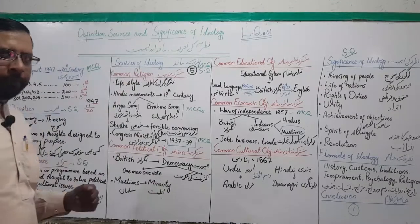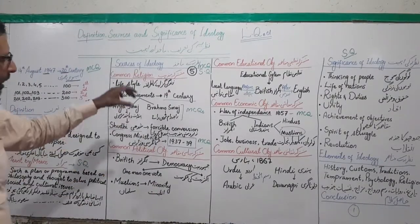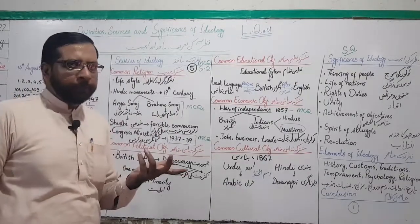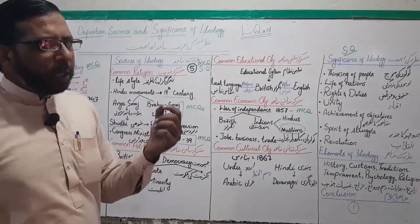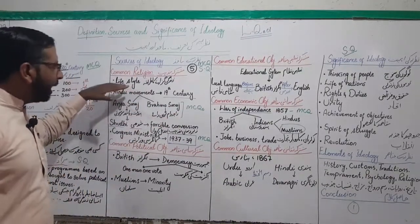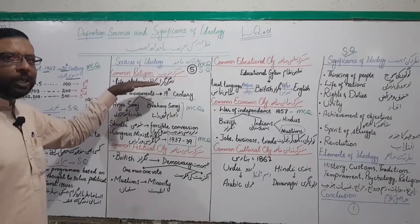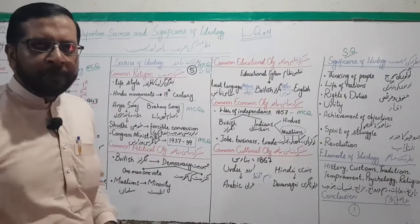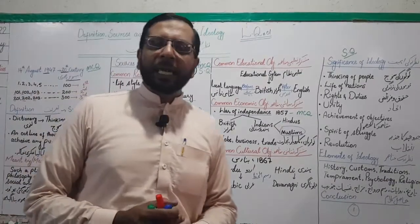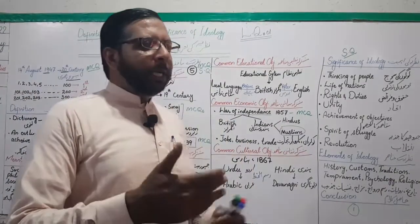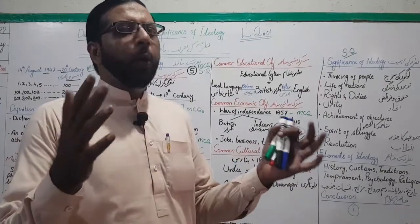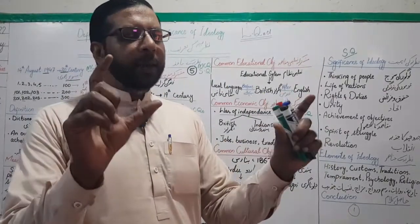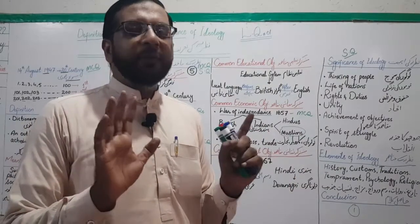First, what do we mean by religion or mazhab? In simple words, religion is a lifestyle — mazhab zindagi guzaarne ka tariqa hai. As mentioned in your books: religion is not only a set of adorations and worships, but it has profound impacts on the whole of social life — insan ki puri zindagi par, ijtamaai zindagi par iske asraat hote hain. It is not just worship.